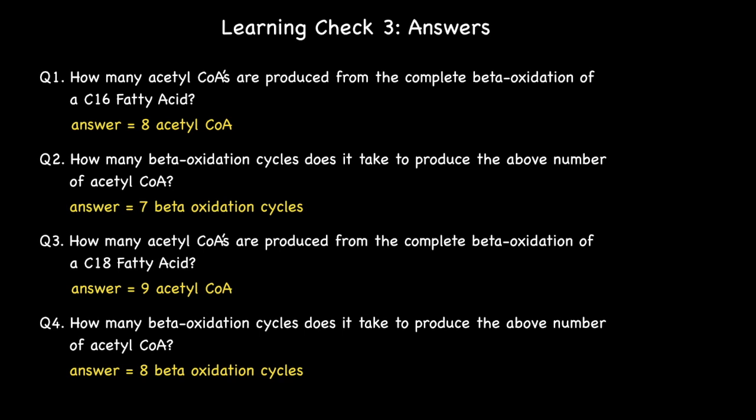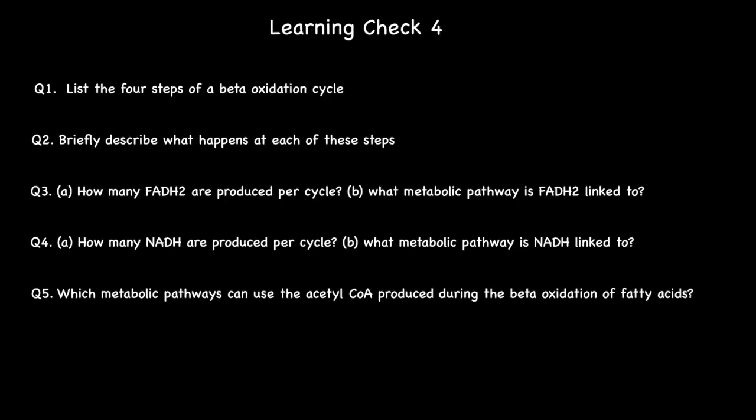One more learning check to go. Let's move on to learning check four. Question one: list the four steps of a beta-oxidation cycle. Question two: briefly describe what happens at each of these steps. Question three: A, how many FADH2's are produced per cycle? B, what metabolic pathway is FADH2 linked to? Question four: A, how many NADH's are produced per cycle? B, what metabolic pathway is NADH linked to? And finally, question five: which metabolic pathways can use the acetyl-CoA produced during the beta-oxidation of fatty acids?